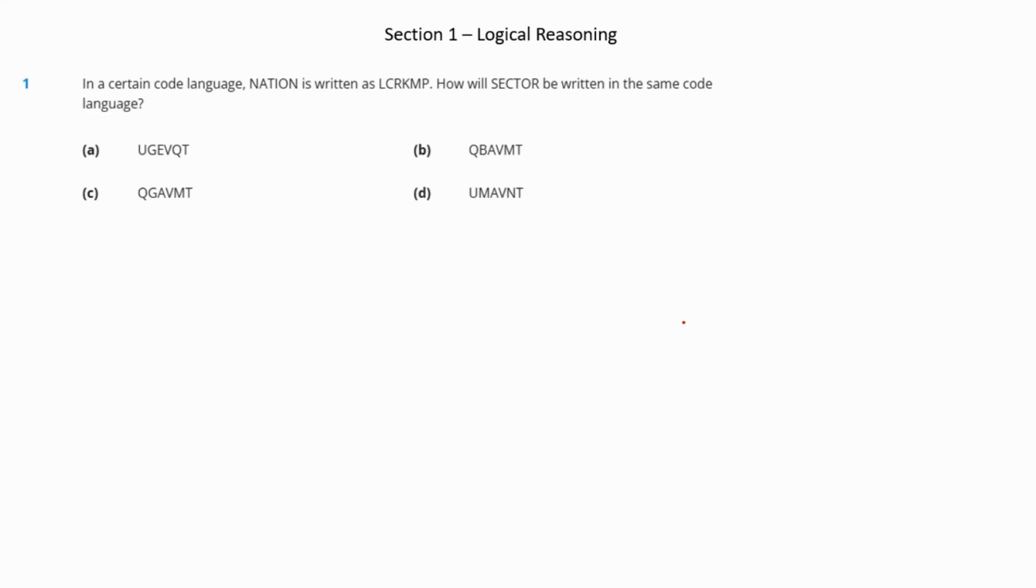Let's start with the discussion. The first question says in a certain code language, NATION is written as LCKRMP. How will SECTOR be written in the same code? You can see they have followed a rule: the first letter will go back two positions, and the next one will go forward two positions.